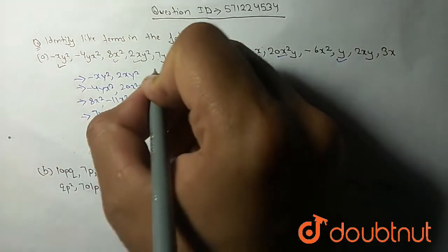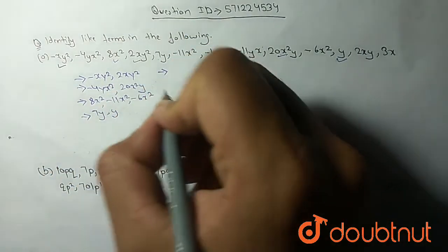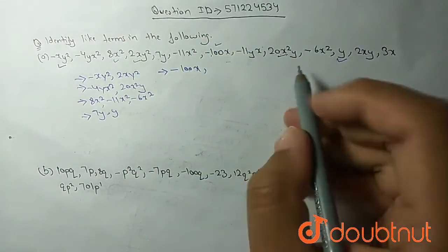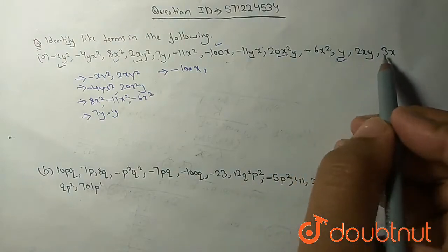They are only like terms. So minus 6x, 100x, and similar is 3x.